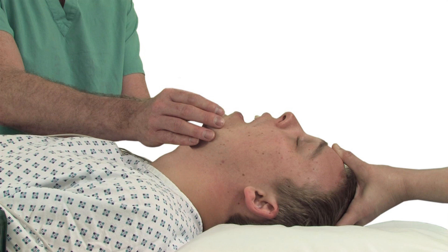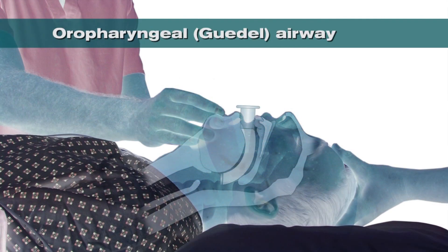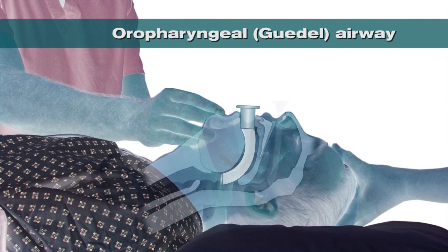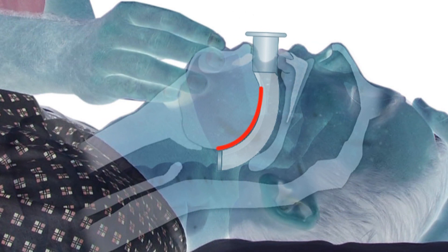A number of adjuncts may also be used to improve the patency of the airway, these being the oral pharyngeal or Guedel airway or a nasal pharyngeal airway. Oral pharyngeal airways, when inserted correctly, lie above and behind the tongue, preventing the tongue and epiglottis from falling backwards and causing airway obstruction.